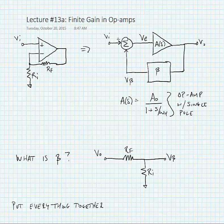Today we're going to talk about finite gain in op amps. Here we have an op amp that's connected to negative feedback with the feedback resistor RF and a shunt resistor RI.